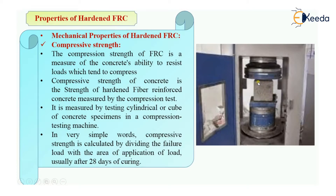To determine compressive strength, we divide the failure load by the area of application of load. For example, if the cube size is 150 mm × 150 mm × 150 mm, the area of application of load is 150 mm × 150 mm. Compressive strength equals failure load divided by that area. The cube or cylinder is generally tested after 28 days of curing. That is the first mechanical property of hardened FRC.